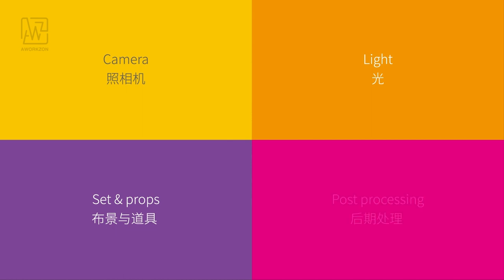Photography has four most important elements: camera, light, sets and props, and post-processing.